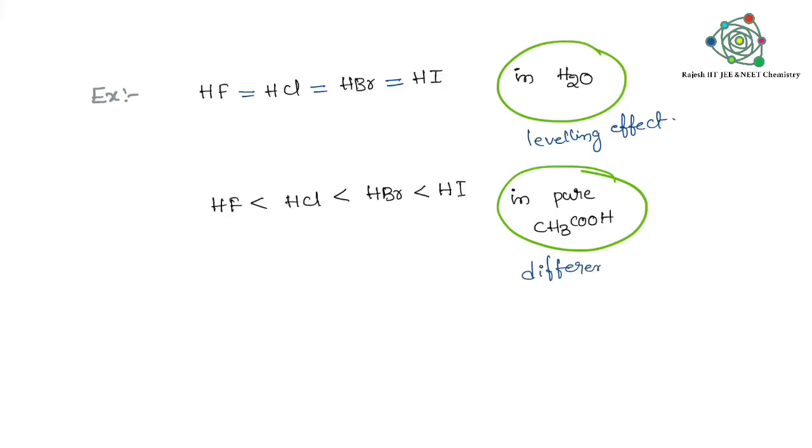HI is more acidic. Why? What is the reason why it is showing differentiation? That is, glacial acetic acid is a differentiating solvent. Water shows leveling - it can make all equal.